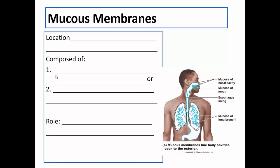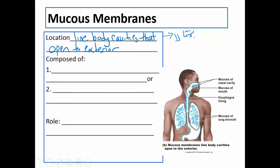The next membrane we're going to look at is called the mucous membrane. Mucous membranes are found lining body cavities that open to the exterior. For example, the digestive system opens to the outside at the mouth, goes down through the esophagus to the stomach and then the small intestines, and eventually opens again to the outside at the anus. So the digestive system is lined with mucous membranes.